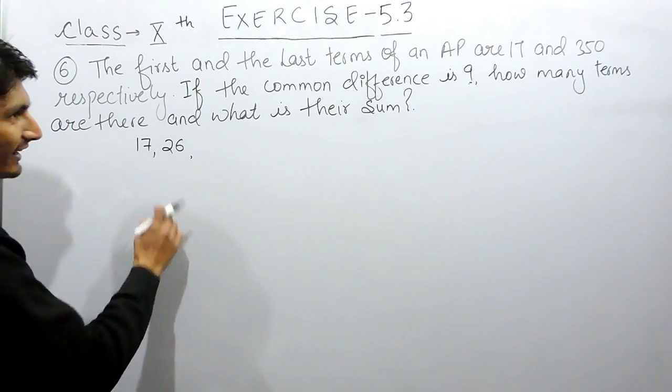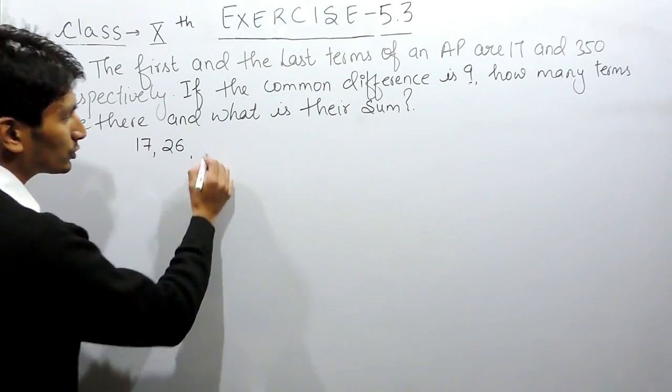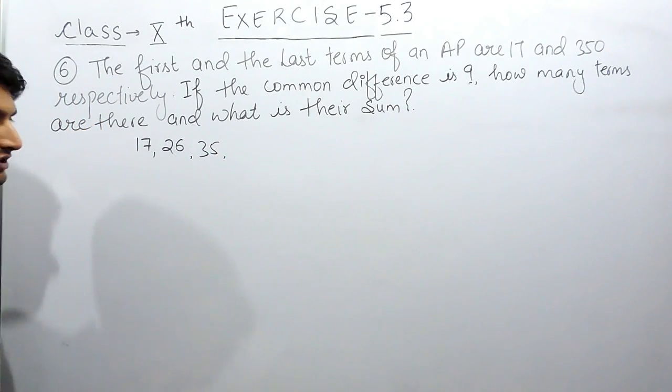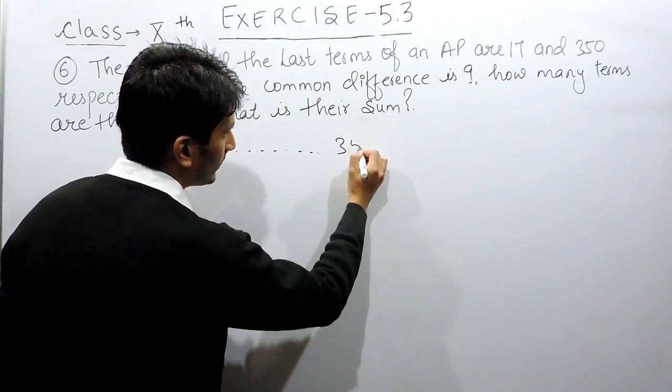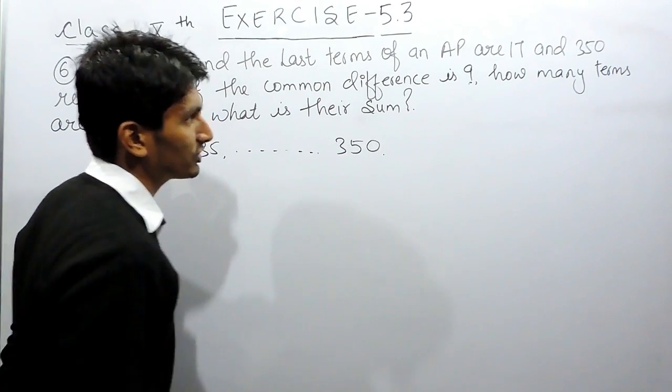Now if I again add 9 to this, 35 will be the next term and this process is continued till the last term is obtained which is 350.